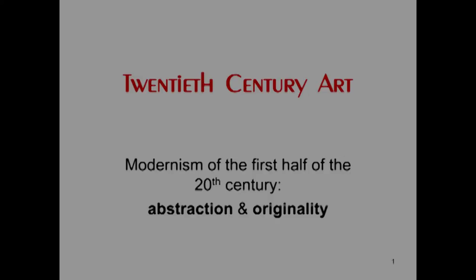As we begin 20th century art, one of the things you'll notice about modernism of the first half of the 20th century are the dual characteristics of abstraction and originality — the desire for the artist to try to do something that is new, that is not just repeating something that has been done before, maybe for centuries.